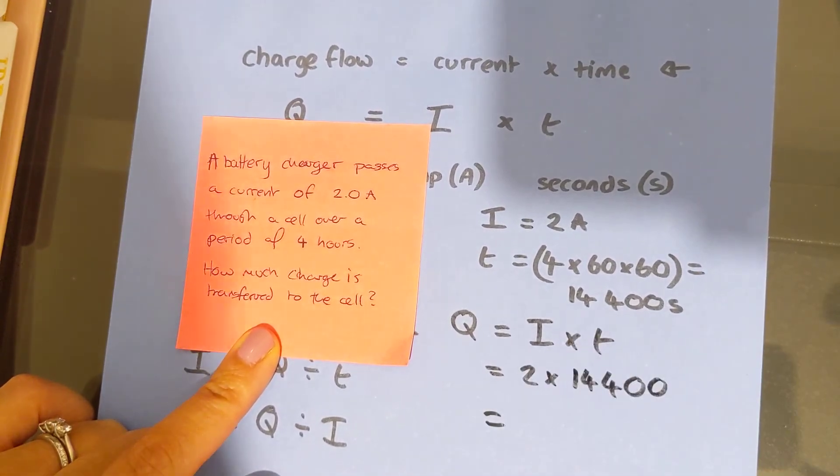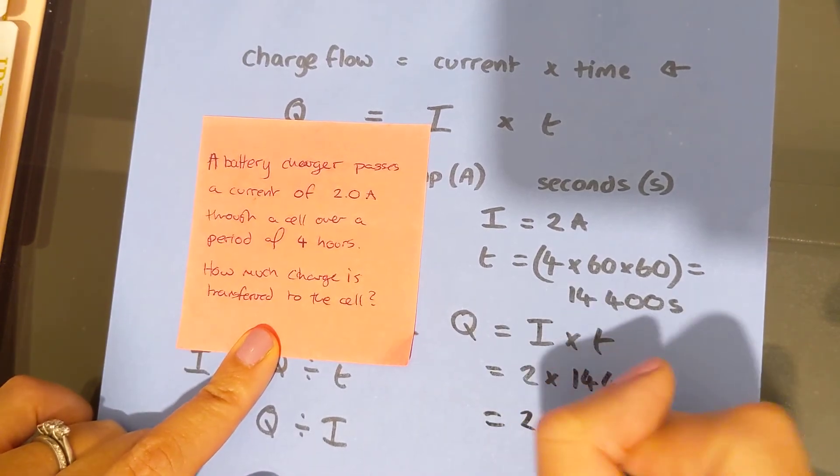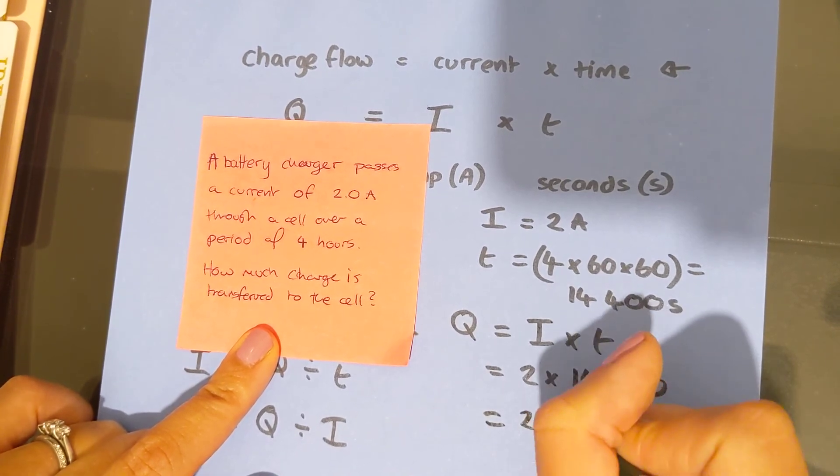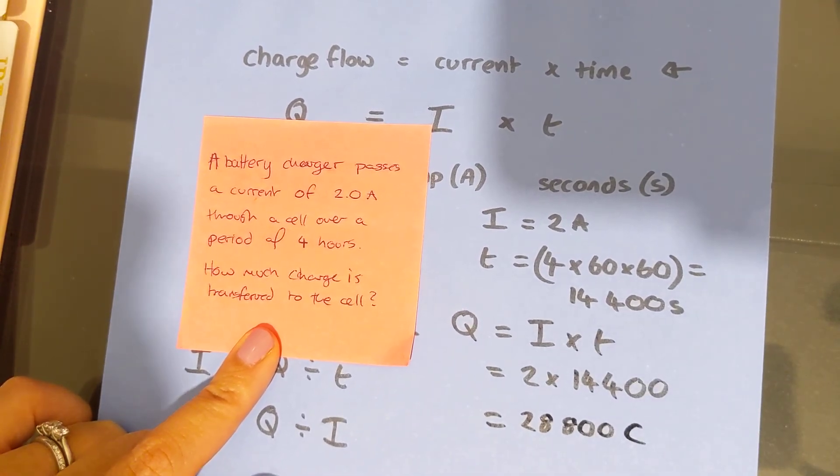So that's going to give us an answer of 28,800 coulombs.